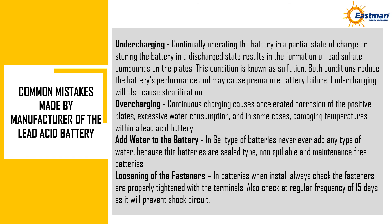Common Mistakes Made with Lead Acid Batteries. Undercharging: Continually operating the battery in a partial state of charge or storing it in a discharged state results in the formation of lead sulfate on the plates (sulfation), reducing performance and potentially causing premature failure. Undercharging also causes stratification. Overcharging: Continuous overcharging causes accelerated corrosion of the positive plates, excessive water consumption, and damaging temperatures. Adding water: In gel-type batteries, never add any type of water, as these are sealed, non-spillable, maintenance-free batteries. Loosening of fasteners: Always check that fasteners are properly tightened at terminals during installation, and re-check every 15 days to prevent short circuits.